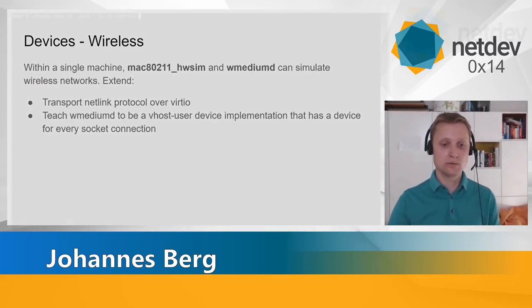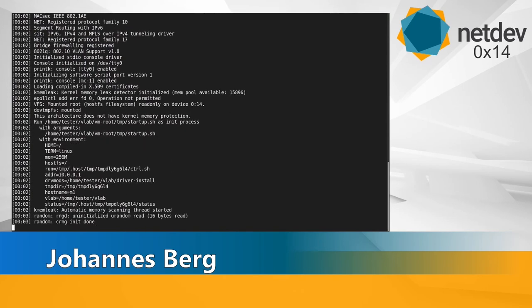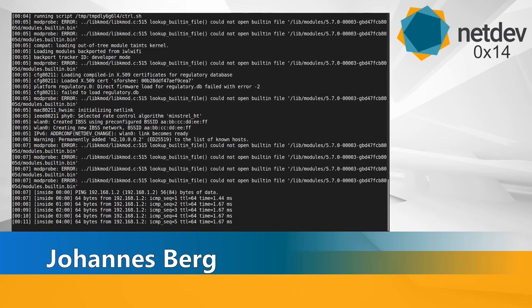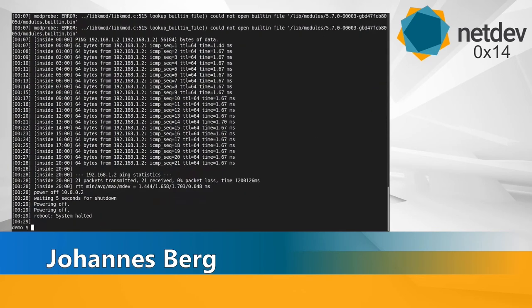Now we can actually simulate multiple devices, multiple instances, multiple hosts and virtual machines, each with a radio, talking to each other over WMediumD running separately. So we can really have multiple instances of Linux rather than everything in a single instance. Let's see how that works in the demo. I have a script that starts four things: the time controller — which includes a simple virtio Ethernet device switch — WMediumD offering hwsim virtio devices connected on a virtual air medium, and two instances of Linux, one in the background and one we can see.